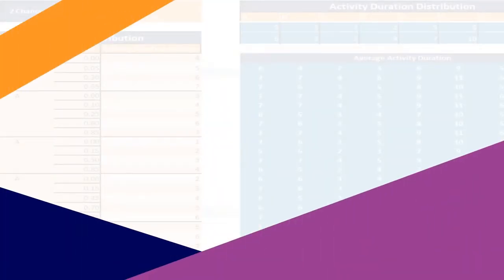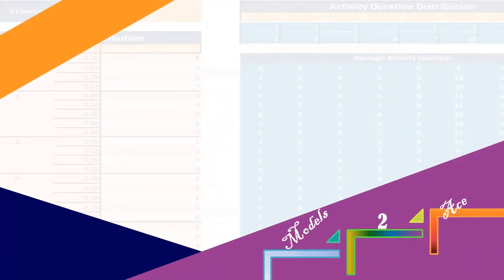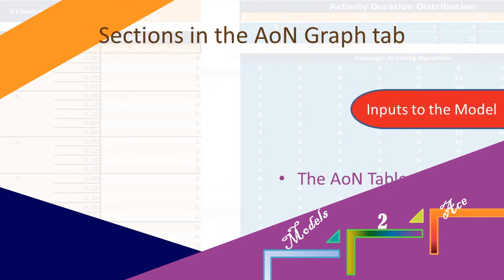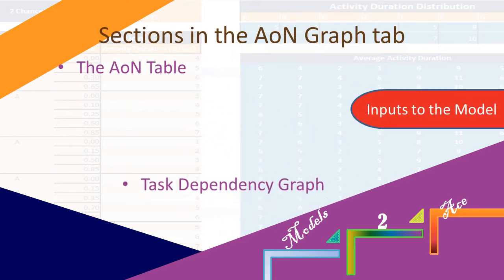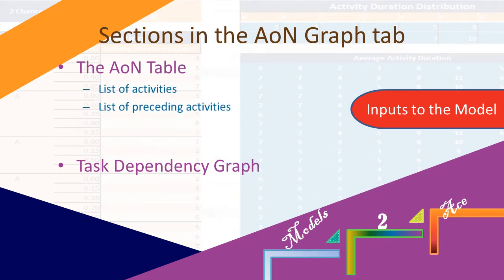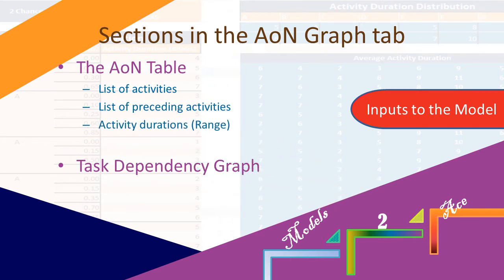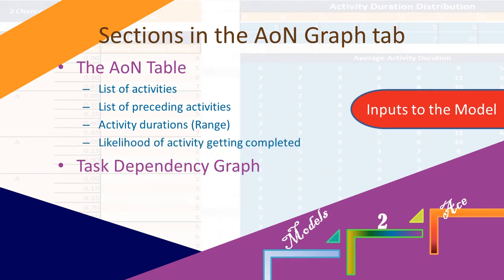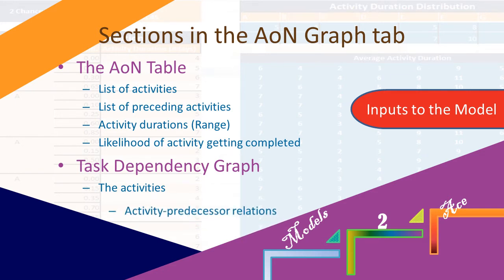The first tab titled AON Graph consists of the table to the left and the directed graph to the right. The table named AON table lists out the eight activities in the project along with data on those activities. This data is the input to the model. The project is visually depicted in the graph to the right, which represents activities on its nodes connected to predecessors by directed arrows.